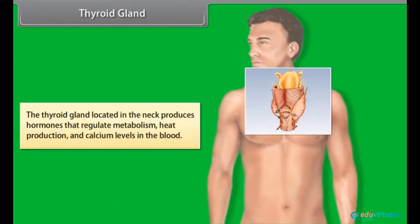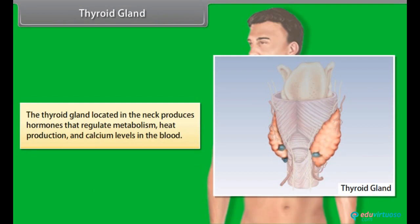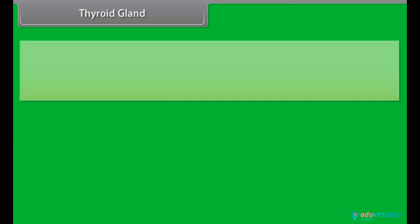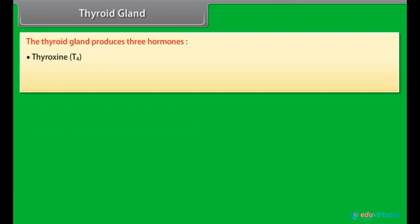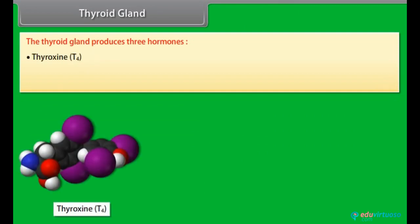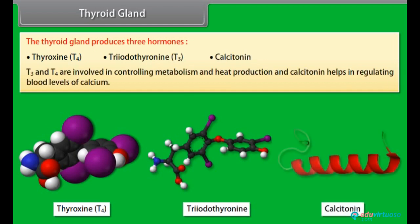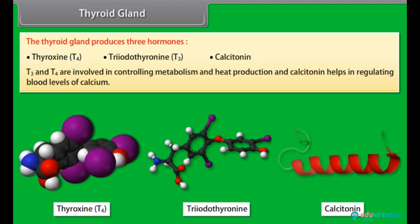The thyroid gland, located in the neck, produces hormones that regulate metabolism, heat production and calcium levels in the blood. The thyroid gland produces three hormones: Thyroxin (T4), Triiodothyronine (T3), and Calcitonin. T3 and T4 are involved in controlling metabolism and heat production; calcitonin helps in regulating blood levels of calcium.